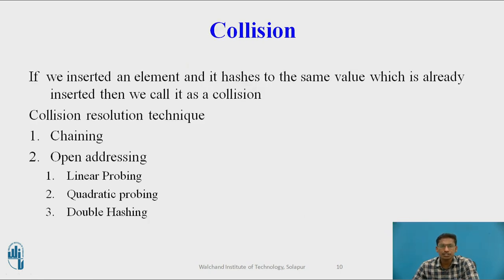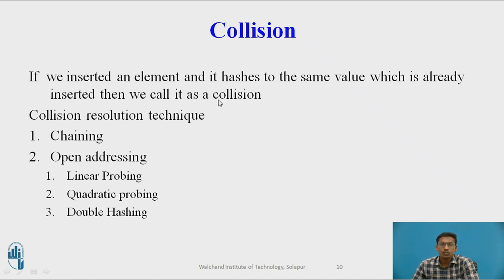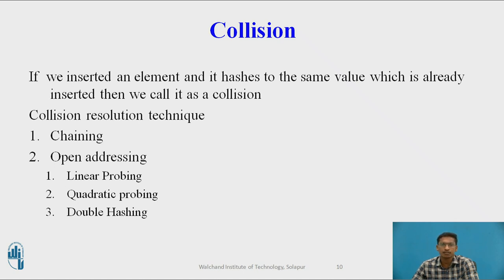Now there is one special situation we call collision inside hashing. If we insert an element and it hashes to the same value which is already present at that location, we call it a collision. Collision means two different input values generate the same hash key. In this case, two values cannot be stored at the same location — only one value can be stored at one location — so the second value cannot be stored there, and we call this situation a collision.